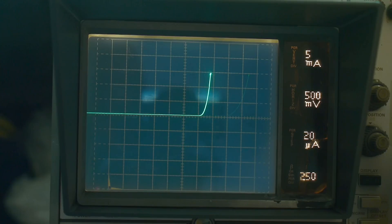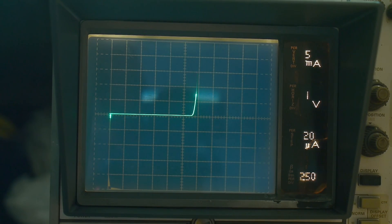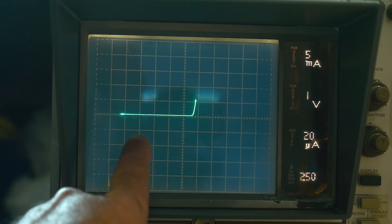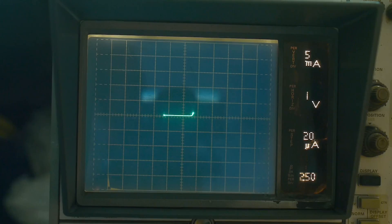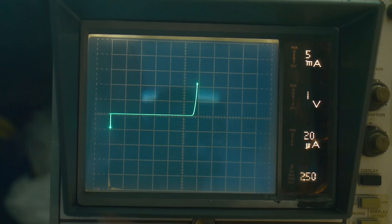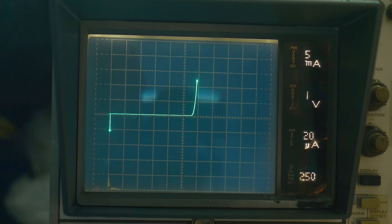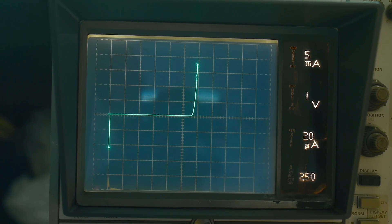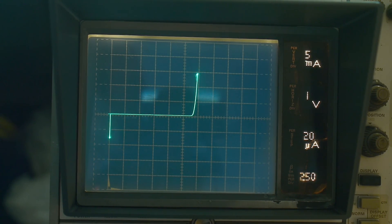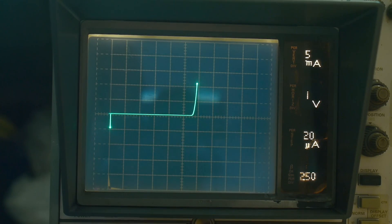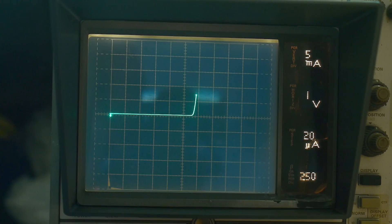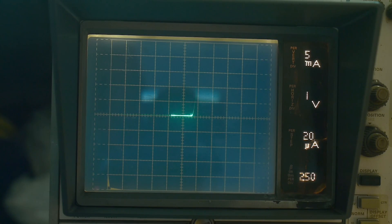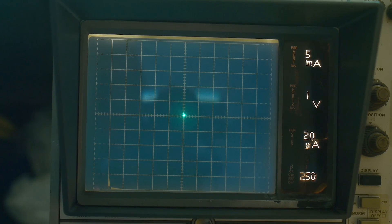I'll go back to one volt per division. And you can see here we're breaking down in the reverse direction. Okay. So this is one, two, three, four, five, and then it breaks down. So it's acting like a five volt zener diode and a really nice one. I mean, zener diodes usually don't break this fast. This is like straight up and down. So very, very nice.